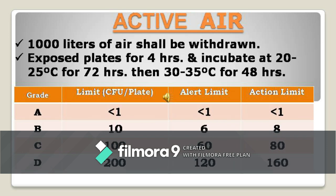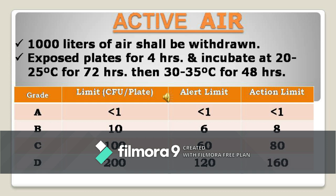For active air sampling, you need an air sampler and media plates. Remember that 1000 litres of air shall be withdrawn; if the capacity of your air sampler is 100 litres at a time, you need to run it 10 times — simply divide 1000 by the sampler capacity. The active surface of the sampler shall be sanitized properly with filtered 70% IPA (isopropyl alcohol) before each sampling. Incubate at the same conditions: 20–25°C for 72 hours, then 30–35°C for 48 hours. The acceptance criteria apply accordingly.